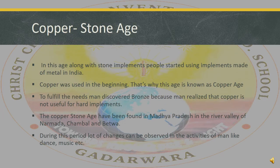Now let's understand a new type of Stone Age, that is Copper Stone Age. In this age, along with stone implements, people started using implements made of metal in India. Copper was used in the beginning, that's why this age is known as Copper Age. To fulfill greater needs, men discovered bronze, because they realized that copper is not useful for hard implements. The Copper Stone Age has been found in Madhya Pradesh, in the river valley of Narmada, Chambal, and Betwa. During this period, a lot of activities of men can be observed, like dance, music, etc.